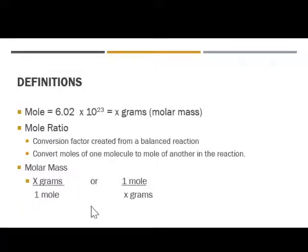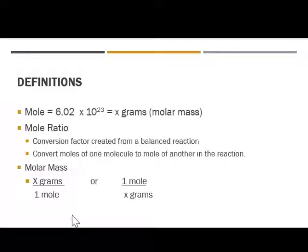We learned about our mole ratio, and our mole ratio is a conversion factor created from a balanced reaction. It converts moles of one molecule to moles of another in the reaction. If you're still not clear on mole ratios, please go back to mole-to-mole calculations and go over it. Our molar mass is calculated from grams using our periodic table. It can be written as x grams over one mole or one mole over x grams. Remember, all of our conversion factors can be flipped back and forth.